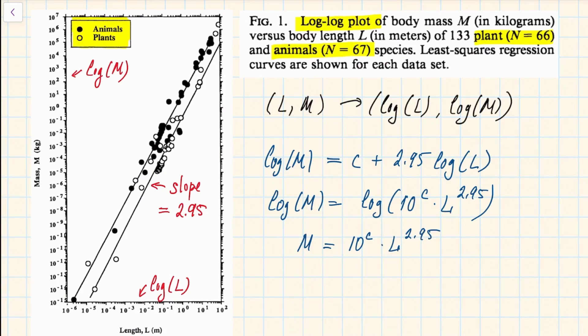And actually if you look at the abstract of this paper you can see that if you fit one line to all these species instead of fitting two separate lines for plants and animals, you will get that this constant is 1.29, and so the relationship becomes 1.29 times L, or length, to the power 2.95.